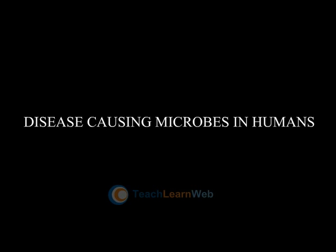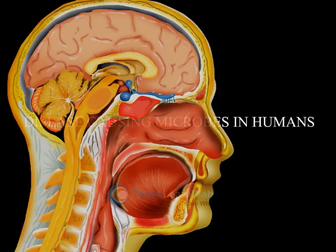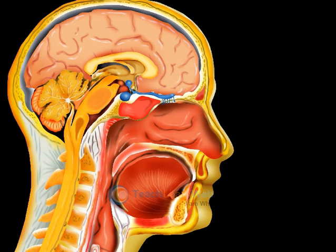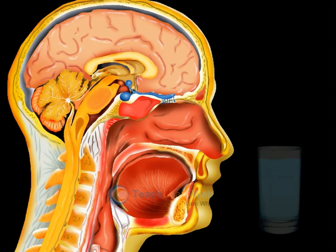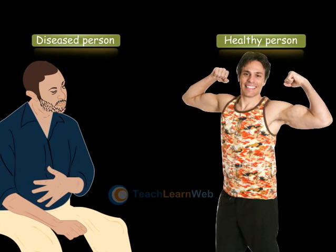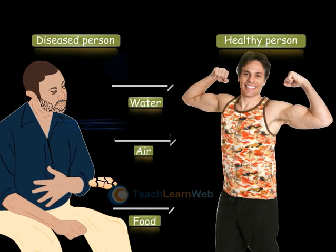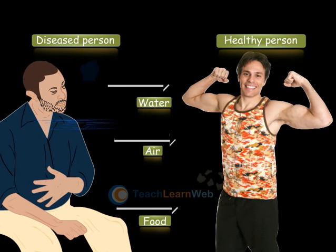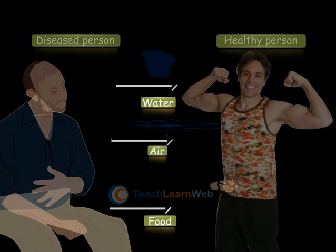Disease-causing microbes in humans: pathogens enter our body through the air we breathe, food we eat, and water we drink. Microbial diseases which spread from an infected person to a healthy person through air, water, food, or physical contact are called communicable diseases.